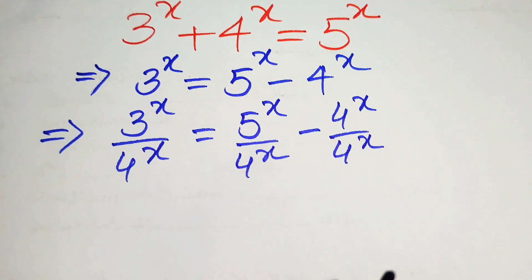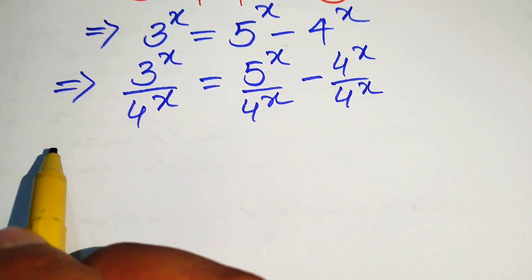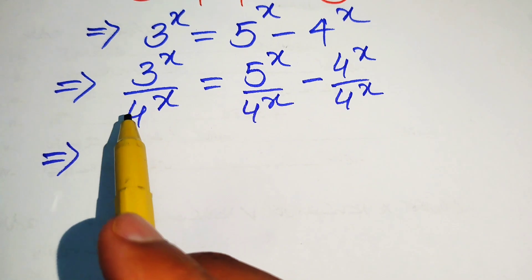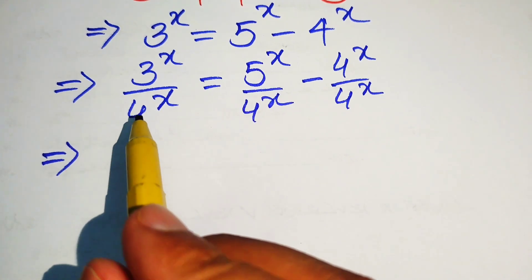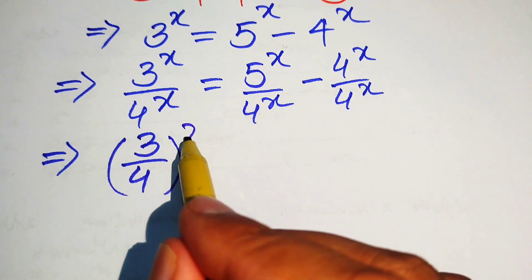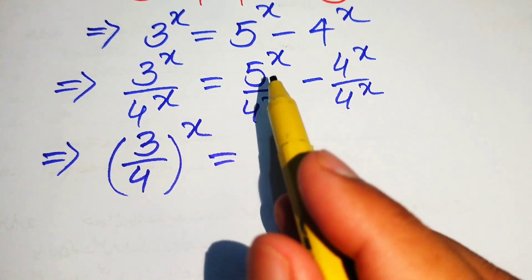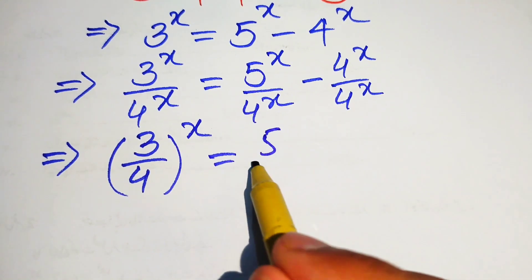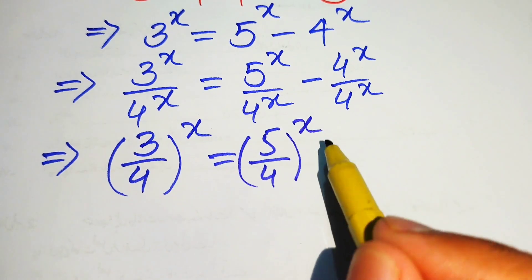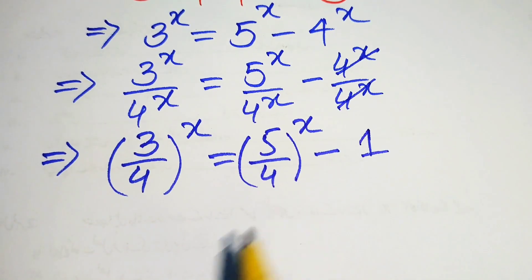We divided both sides by 4 to the power of x. On the left hand side, the two numbers have the same exponent, so we combine them and write it as (3/4) to the power of x. On the right hand side, 4^x over 4^x cancels to give 1, resulting in (3/4)^x = (5/4)^x minus 1.